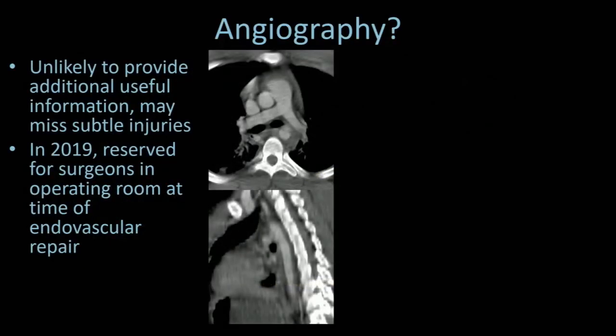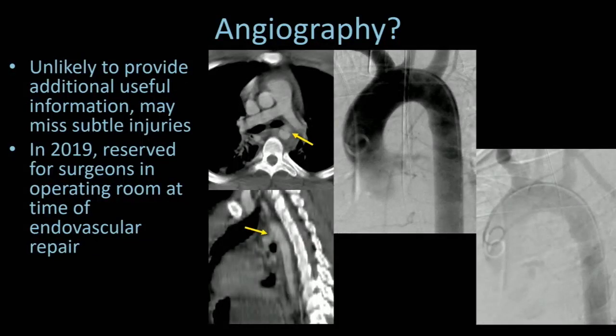What about angiography? It's really unlikely to provide additional useful information. In 2019, it's reserved for surgeons in the operating room at the time of endovascular repair. If we've got tough cases, we don't recommend angio. It's either going to be repeat short-term CT in 24 hours or intravascular ultrasound. This patient with a clear aortic injury on CT had an angiogram for renal artery injury. When they shot the arch angiogram, you can barely see it. These are shown much better on CT.